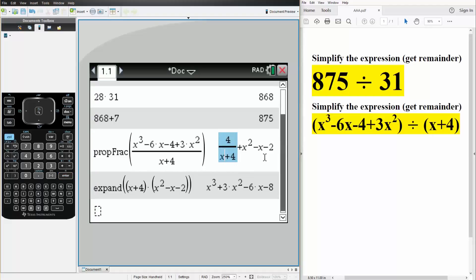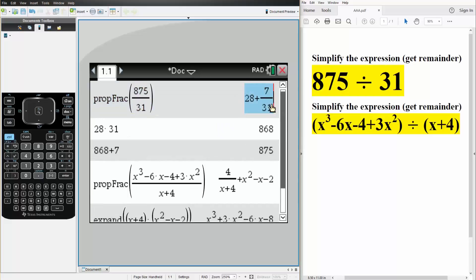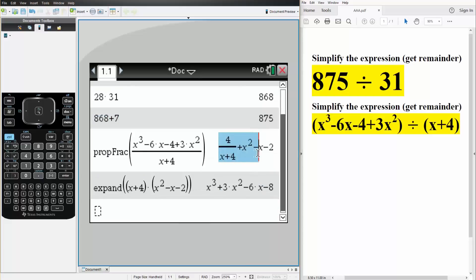And so the final answer for both of these problems were 28 plus 7 over 31 for this question. And in this problem, the final answer was x squared minus x minus 2 plus 4 divided by x plus 4. And that's how we can do long division and get remainders using the TI-Inspire.